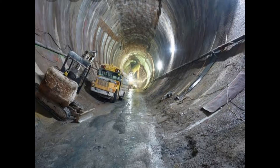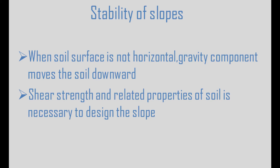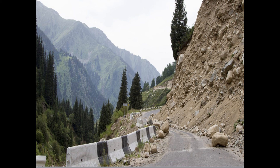Moving on to the stability of slopes — when the soil surface is not horizontal, the soil mass tends to move along the surface. The surface of the soil needs to be analyzed to design the slope properly. When a slope is established, the soil has certain properties, and gravity acts as the vertical component active on the slope.